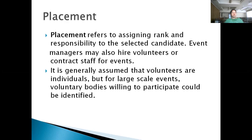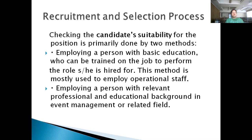In the recruitment and selection process, candidate suitability has to be ensured for a particular position. There are two methods: you can hire a fresher with the basic qualification needed and then train that person to perform the task, or you can look for a professional with the educational background and expertise that can be used straight away. You can recruit and train a person to suit your requirements, or hire someone with sufficient experience whose expertise is directly useful.